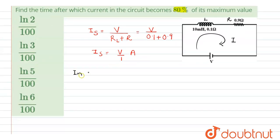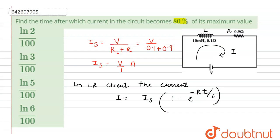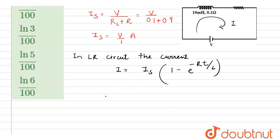We also know that in an LR circuit, the current I is given by the formula: I = IS × (1 - e^(-Rt/L)). According to the question, the current is 80% of its maximum value. So we write I = 80% of IS, and the maximum value IS is V. So: I = V × (1 - e^(-Rt/L)).